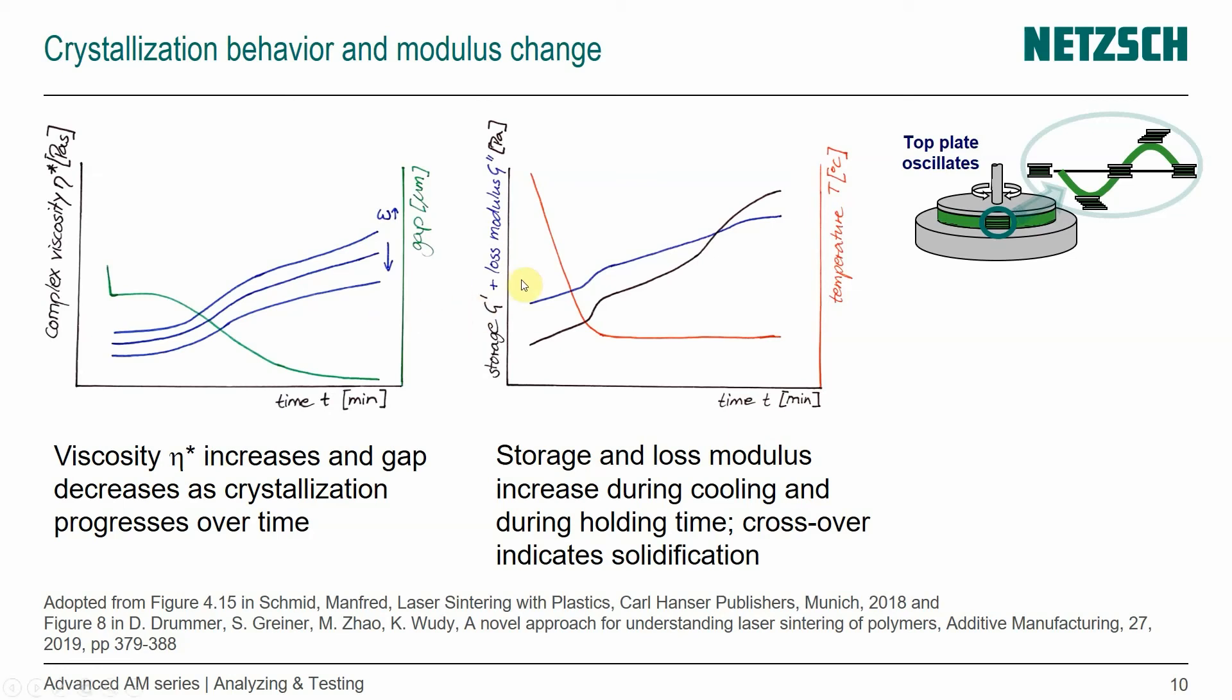And then on the right I show an oscillation measurement where we actually look at the storage and the loss modulus. What is changed here is the temperature and we look at over time. So we start from a high temperature and we're seeing cooling effect and then we keep that temperature constant. And as the material is cooling, the storage and loss modulus are increasing.